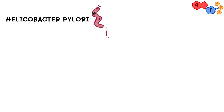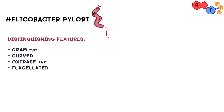The third and last organism is Helicobacter pylori. Like the others, it is a gram-negative curved rod, oxidase positive with flagella. It is also catalase positive and urease positive. This is sometimes referred to as a triple positive organism because of oxidase, urease, and catalase.